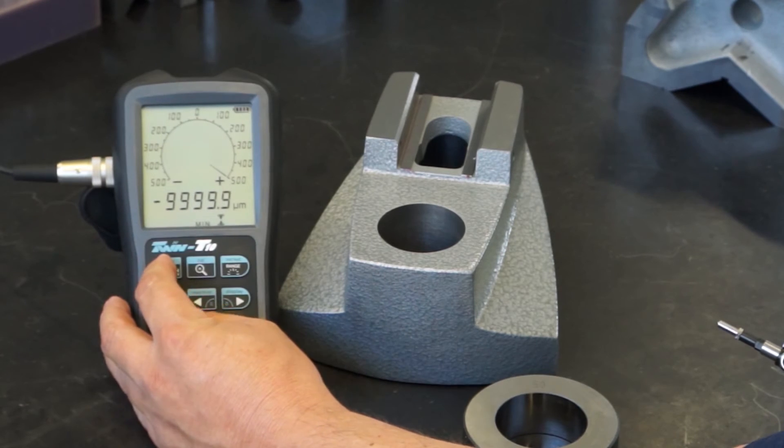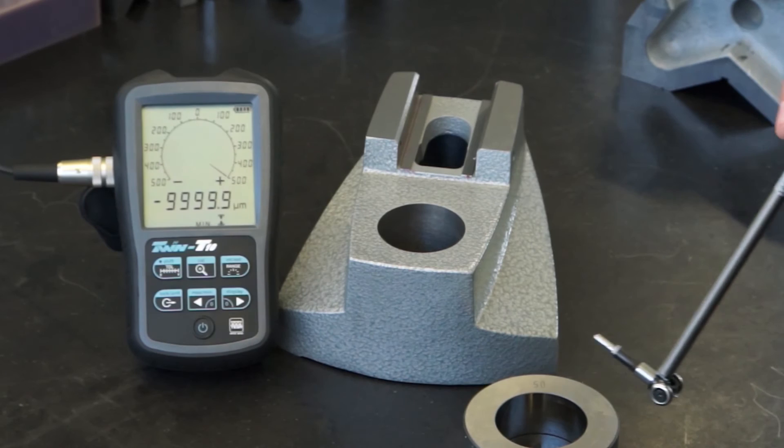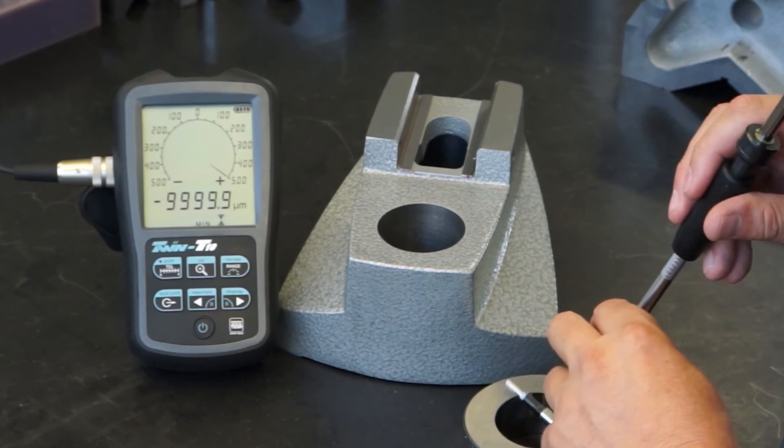Now select the min function to memorize the min value. Keep the shift key pressed and press the min key twice so the min icon appears on the display.